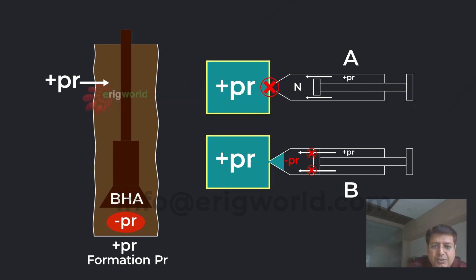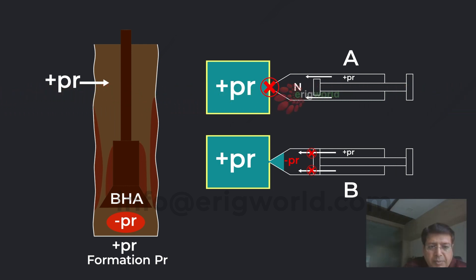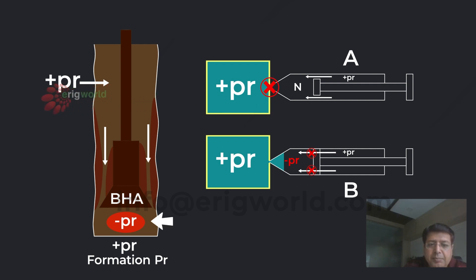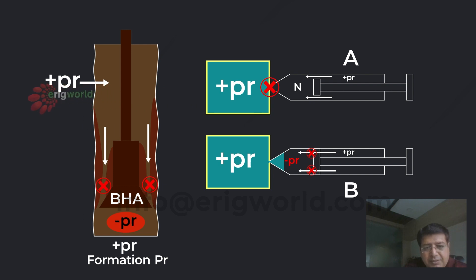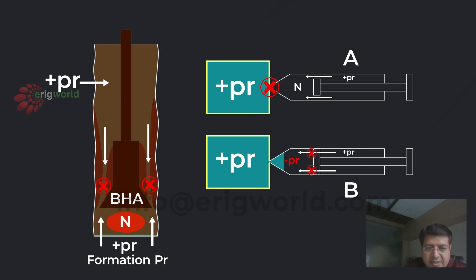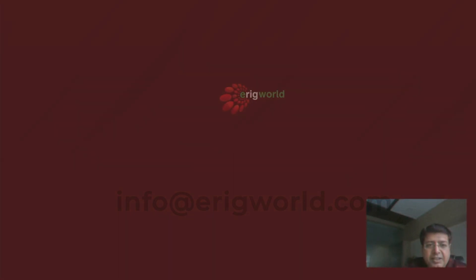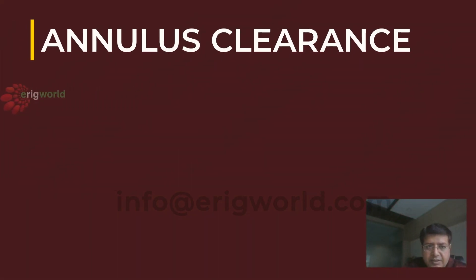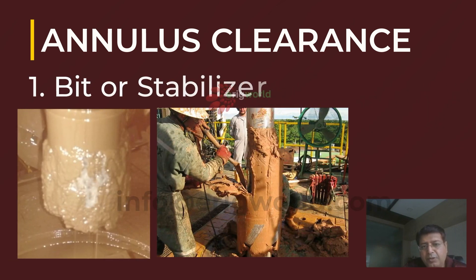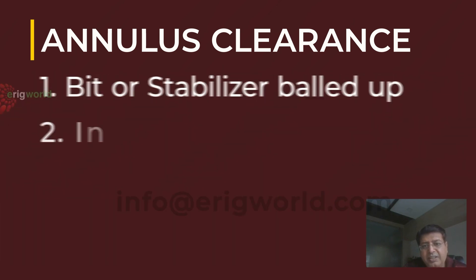However, if the annular clearance decreases — due to bit or stabilizer balled up, or an increase in BHA length — when I make an upward movement, the restriction in the annulus prevents sufficient fluid from coming down. As a result, the negative pressure remains negative and formation fluid enters to neutralize the effect, causing swabbing. The first factor that leads to swabbing is therefore annular clearance, which decreases due to bit or stabilizer balled up or increased BHA length.